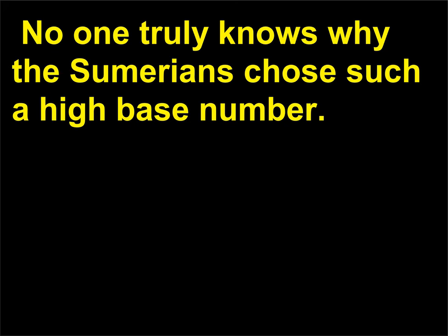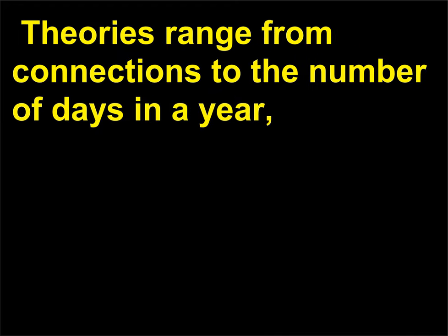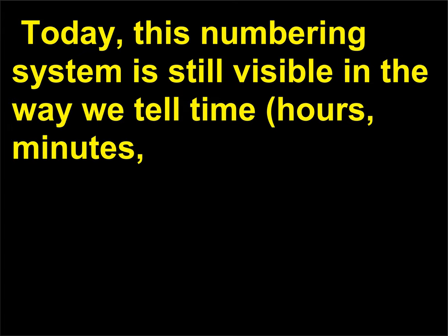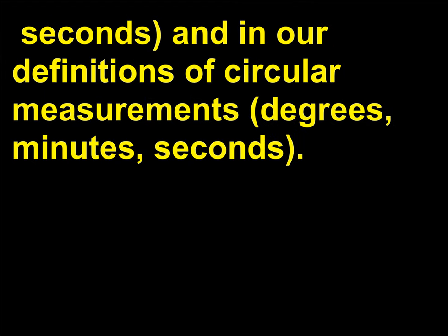No one truly knows why the Sumerians chose such a high base number. Theories range from connections to the number of days in a year, weights and measurements, and even that it was easier to use for their purposes. Today, this numbering system is still visible in the way we tell time — hours, minutes, seconds — and in our definitions of circular measurements — degrees, minutes, seconds.